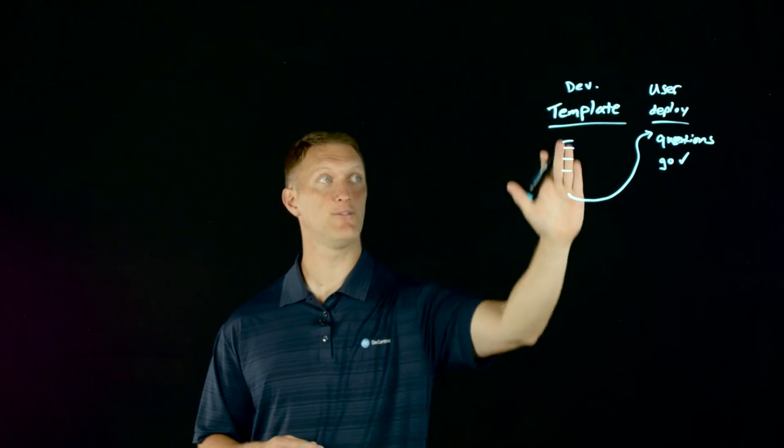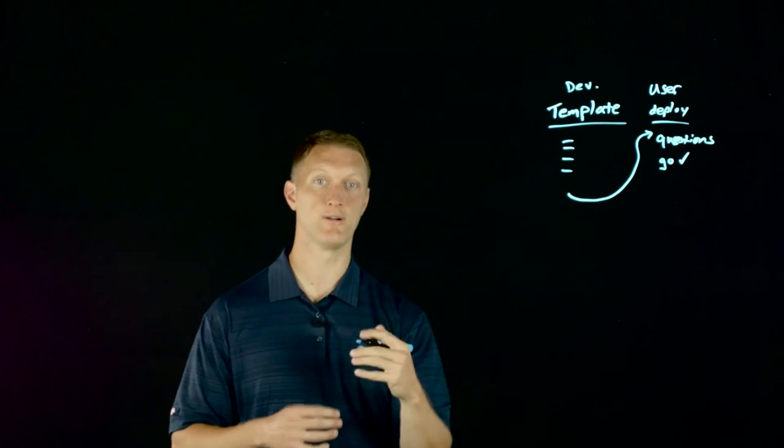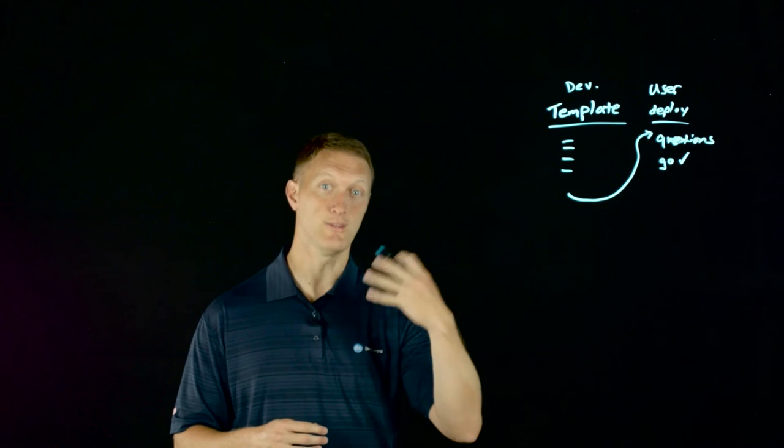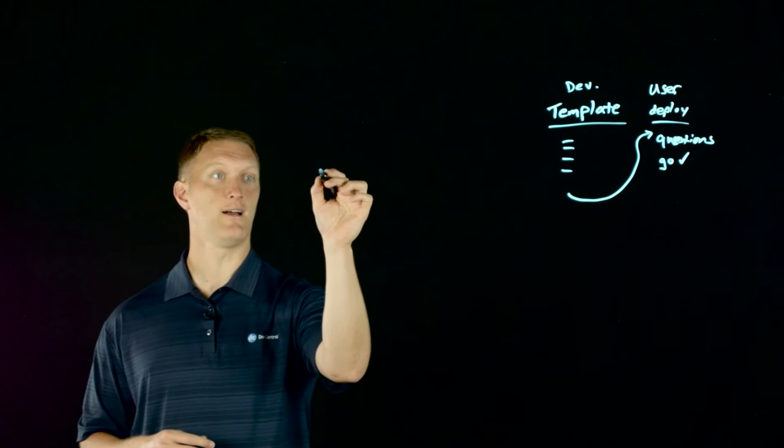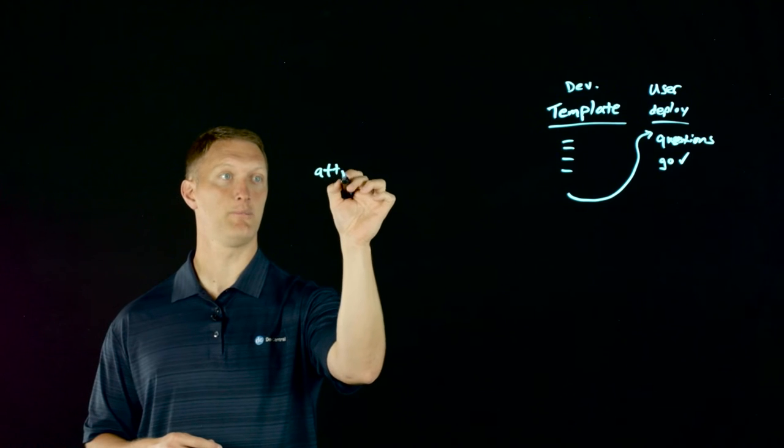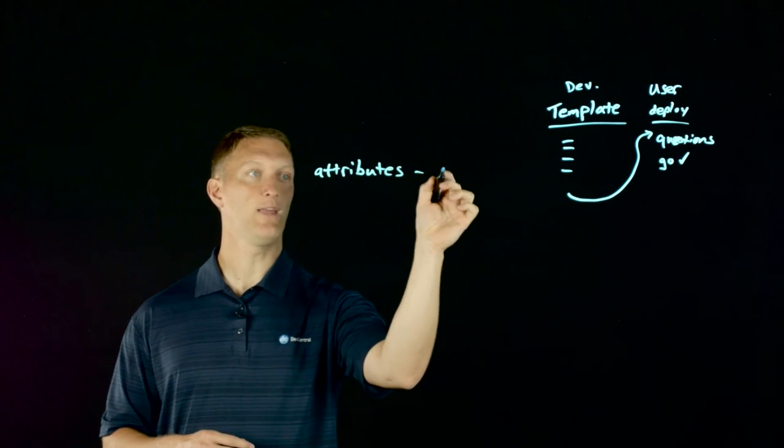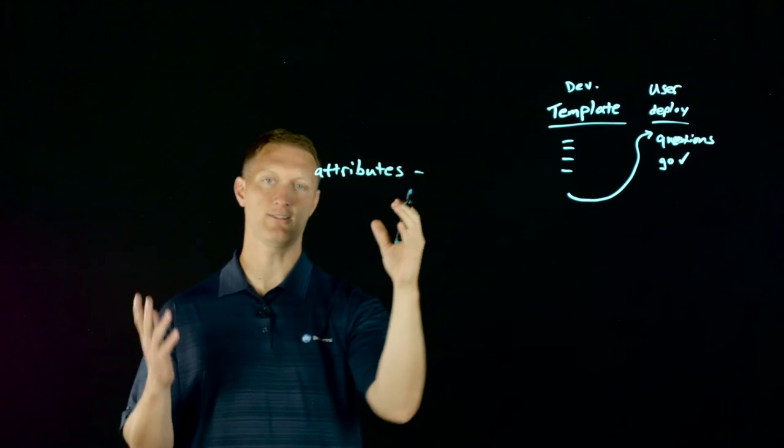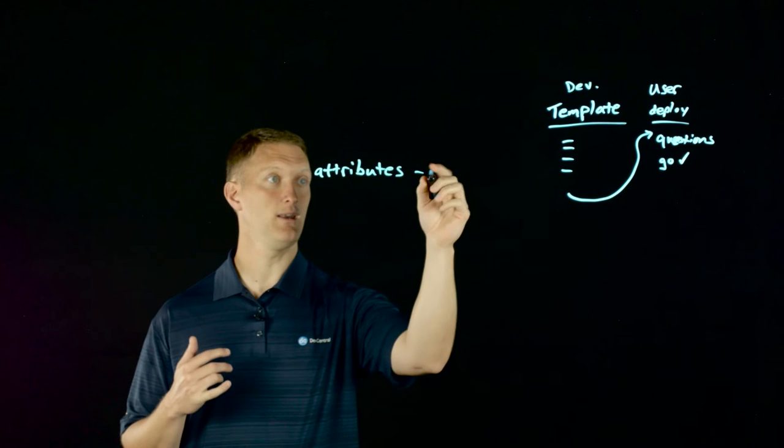So how do we develop this template? Because this is programmability month, we want to focus on the developer. The first thing that a template involves is an attribute section. The attributes section is where you decide what are the modules that we need.